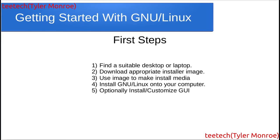Just like many other operating systems, we have a few basic first steps. The first and most important step is to find a suitable computer — this can be a desktop, a laptop, a smartphone, or an embedded system like a Wi-Fi router or any single-board computer. There's a lot of compatibility with Linux. After that, you want to find an installer image, which will normally be an ISO file or an IMG file.